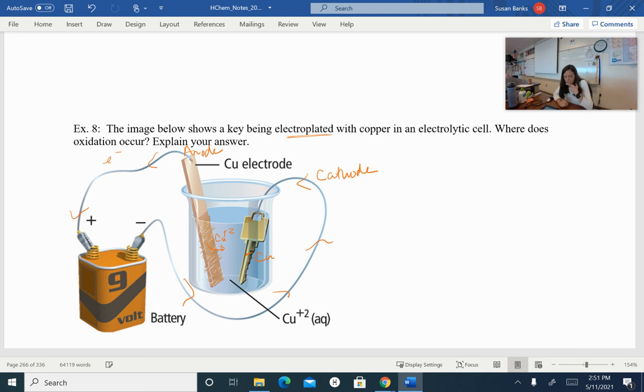So where does oxidation occur? We have red cat, so that's reduction, and anox. So at the anode is where oxidation occurs. So oxidation occurs on this copper electrode. So this is where we have oxidation occurring. So there we go. That is how electrolytic cells work. And a lot of electrochemistry is used in industrial processes all the time. So if you have any questions, please come and see me or email me. Have a great day. Talk to you later. Bye.